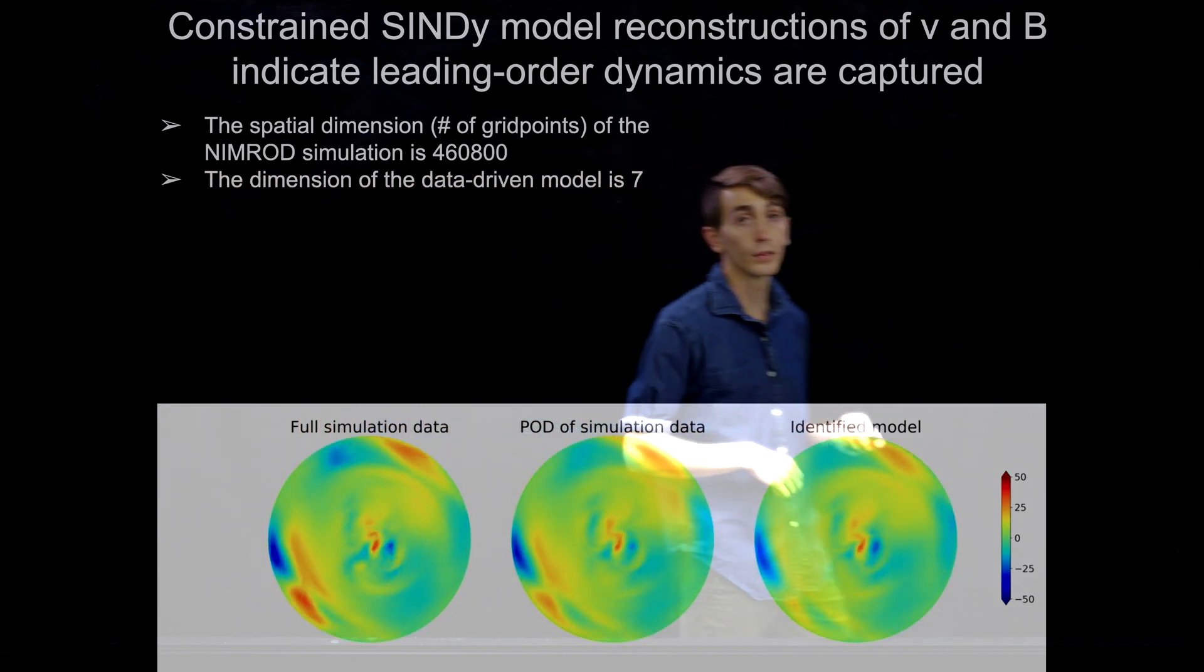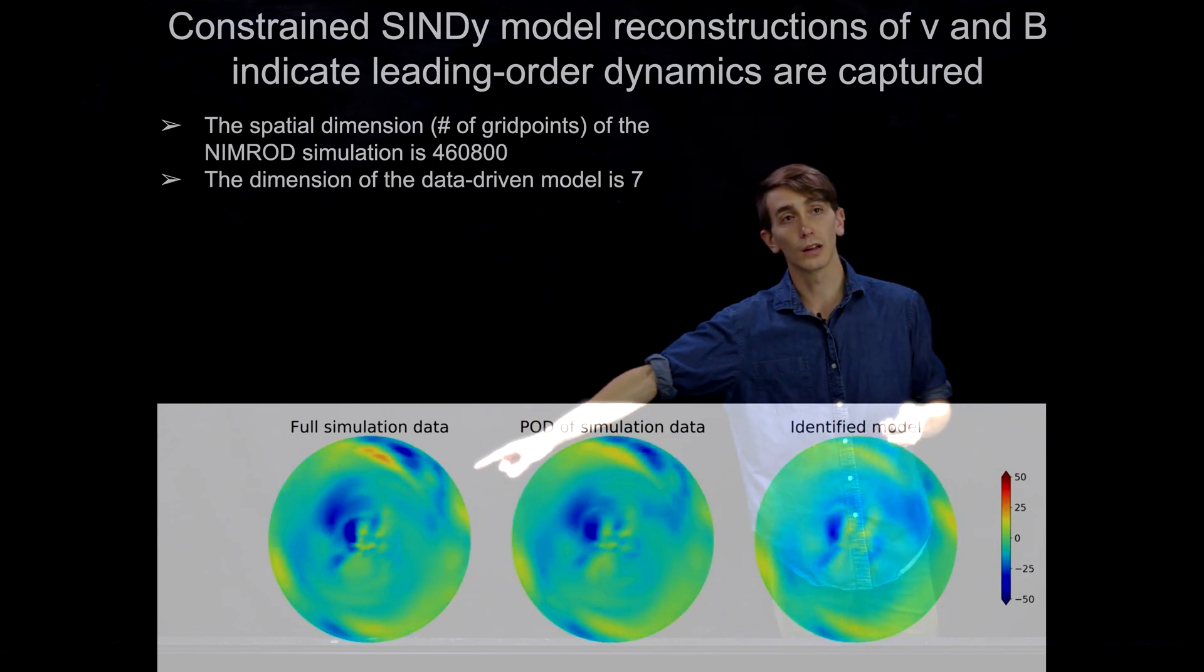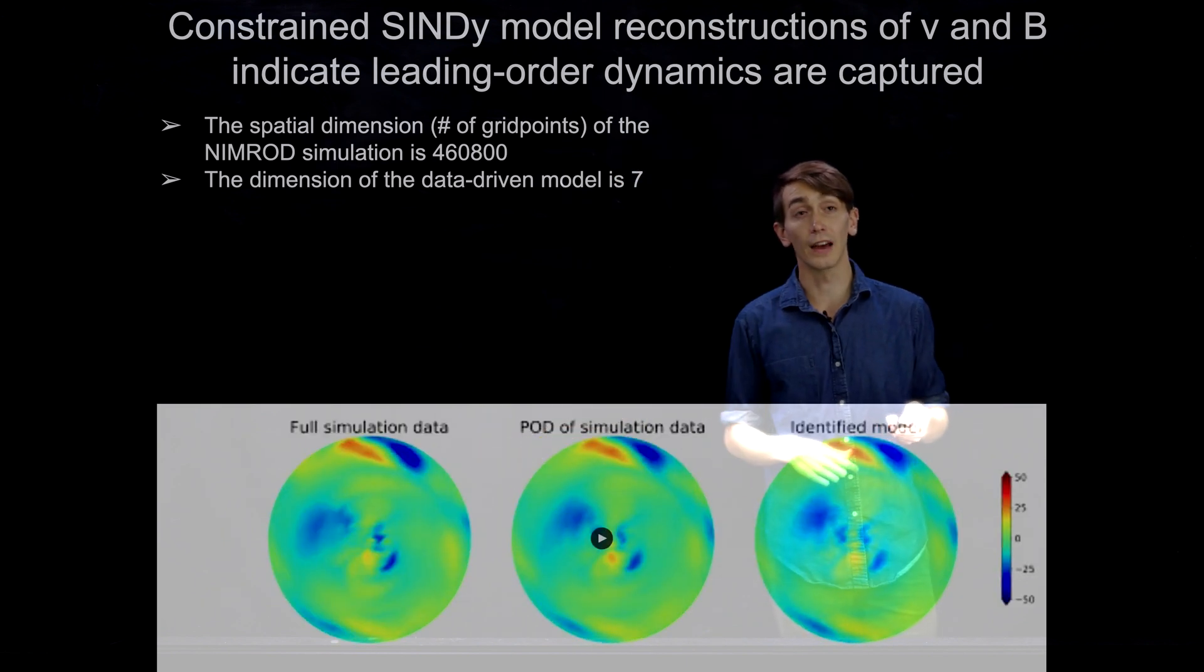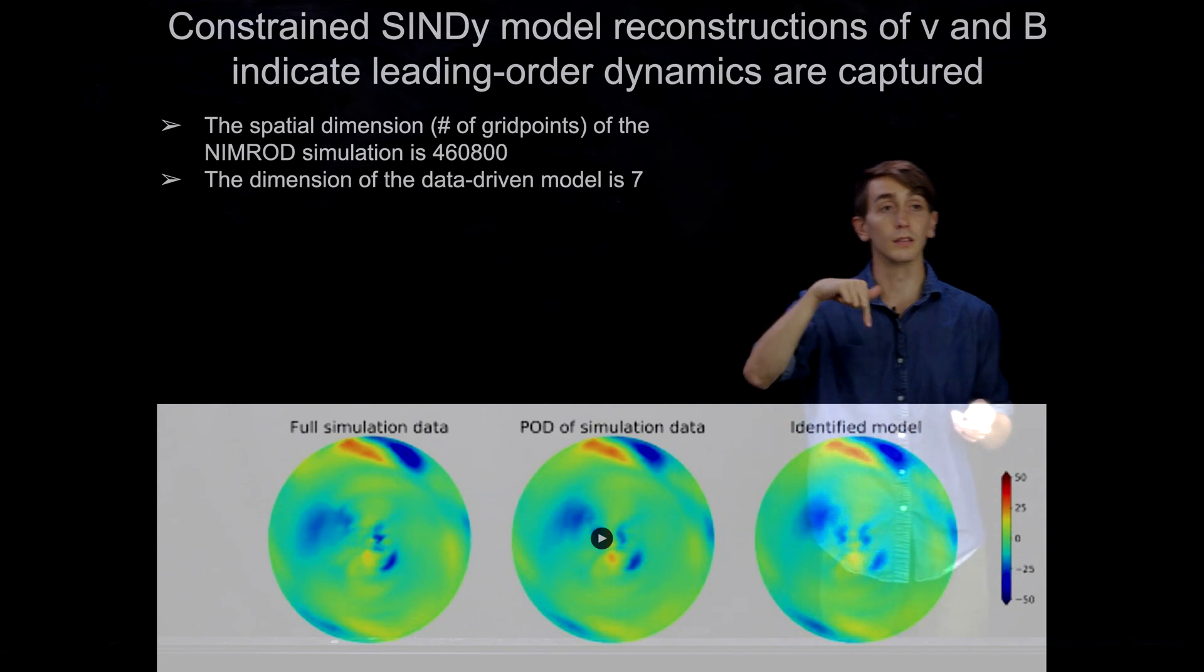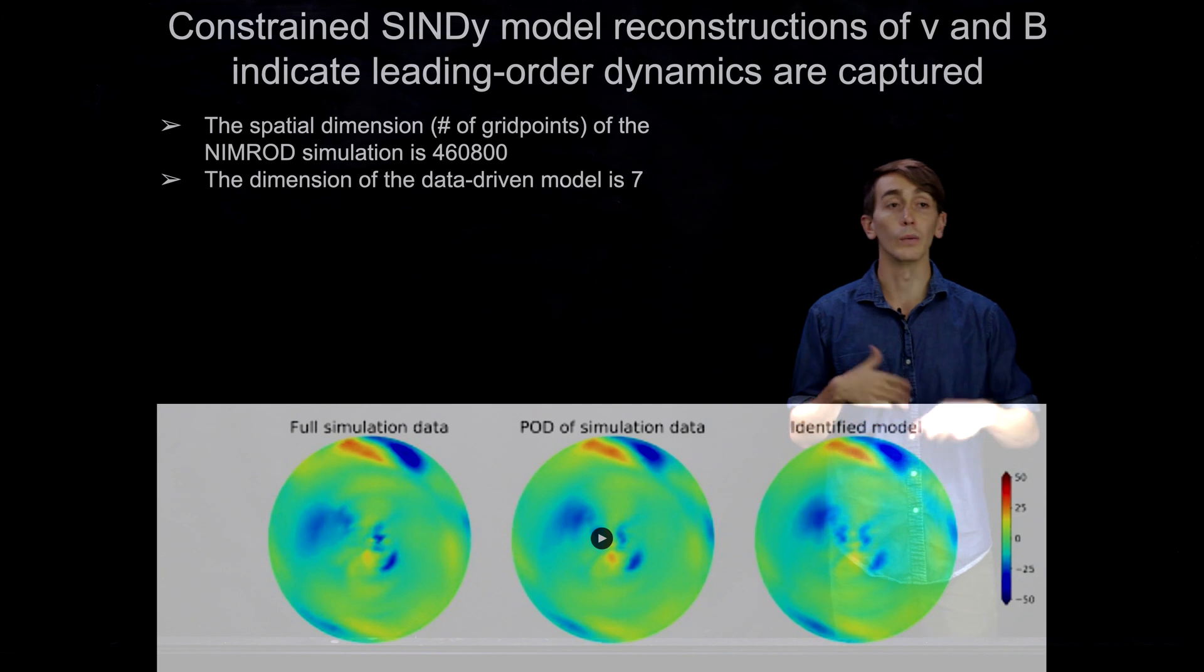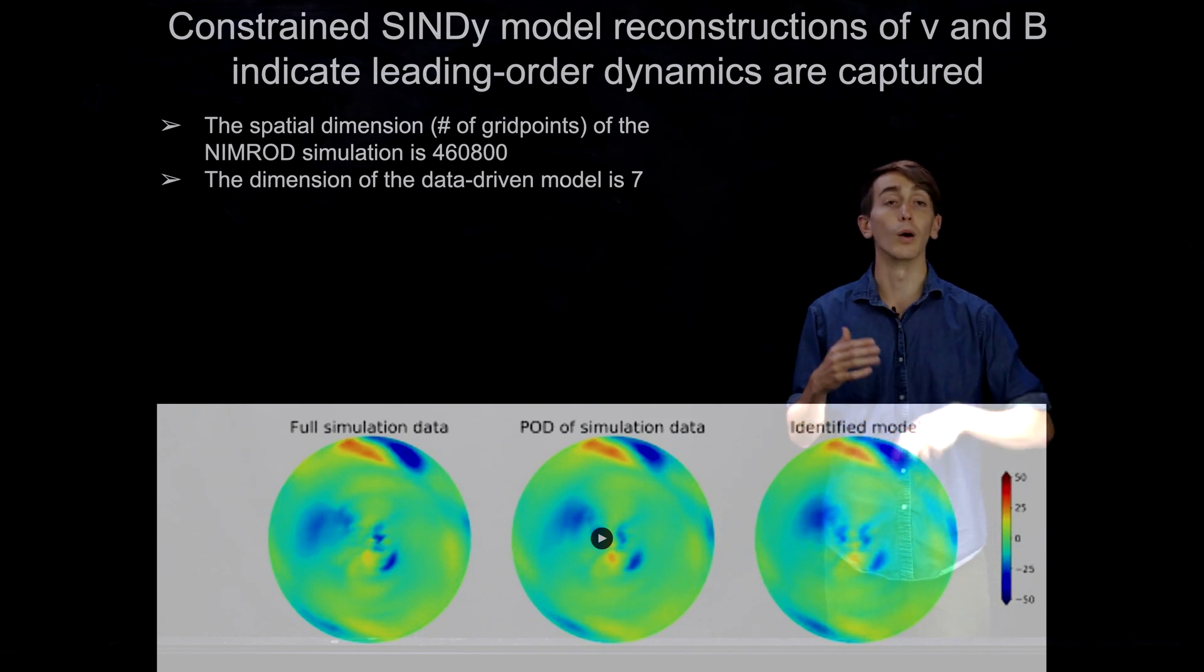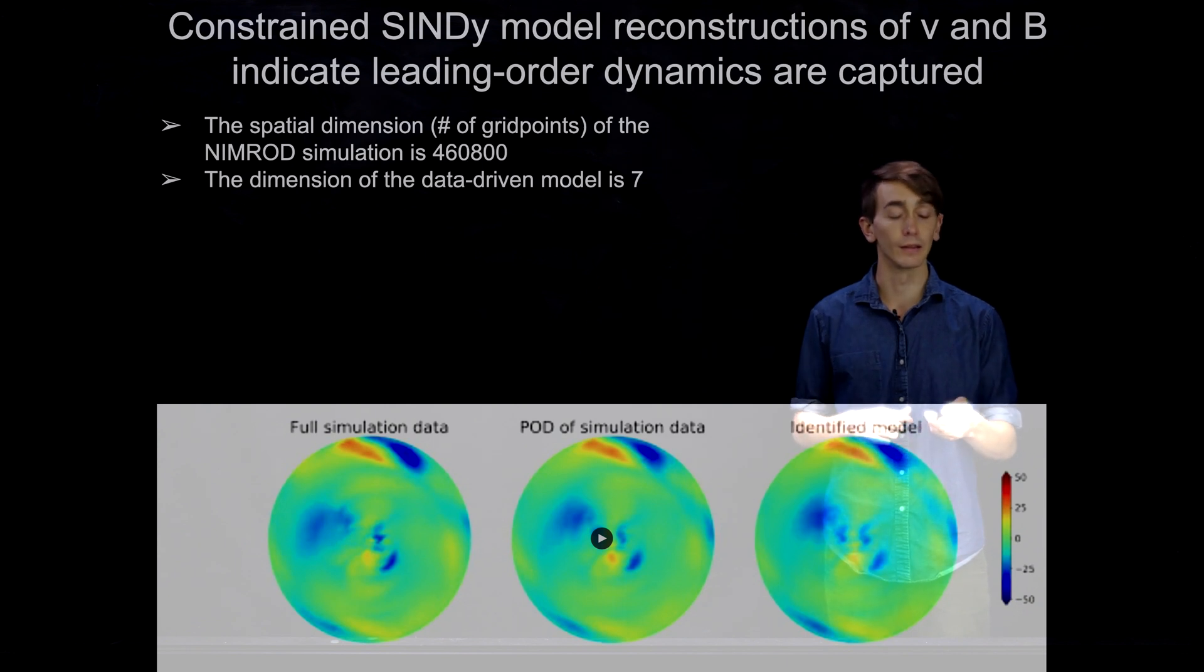And importantly, I just want to point out that the spatial dimension, i.e. the number of grid points in the simulation that's running here is about 460,000. And the dimension of this data-driven model below me is 7. So with just 7 temporal modes, we can forecast in the future with really quite good accuracy. And this method can also be computed so fast that we can actually do this in real time. And if we're trying to do some real-time control, we can build the model every time window that we need it.